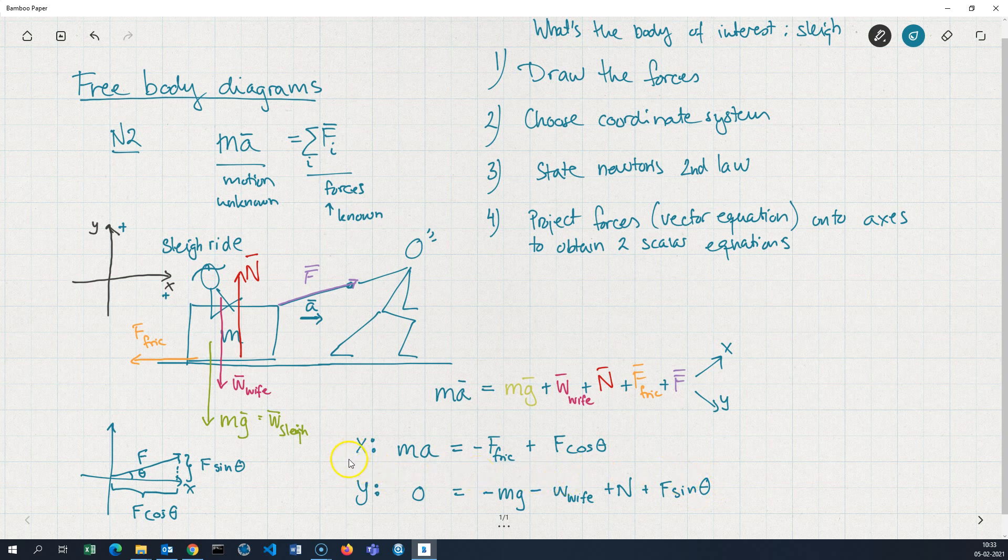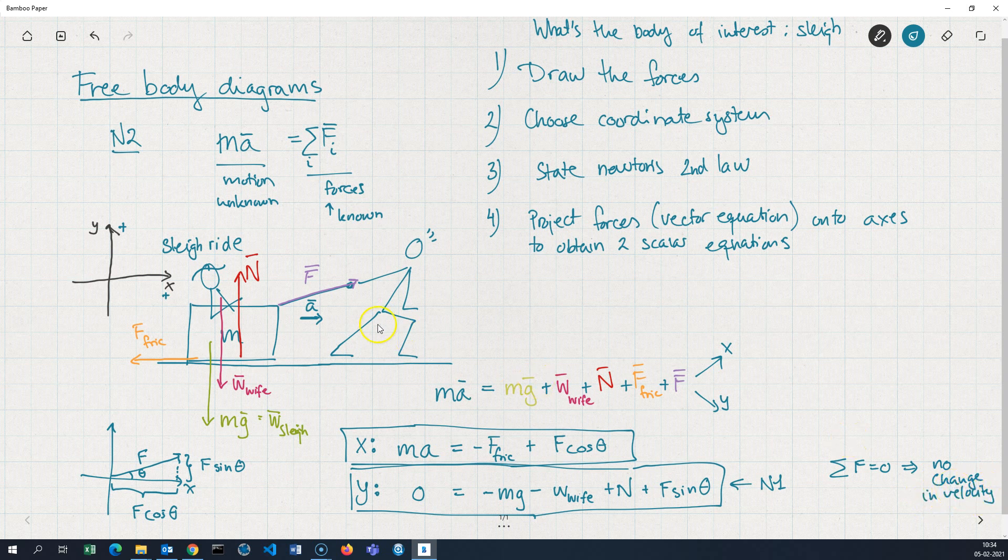What we have now here is two scalar equations. All these symbols now represent numbers, not vectors. And, what you could do from here. Well, I might just want to note one thing. This is actually Newton's first law. Since there is no acceleration. So, we would say that we've actually stated Newton's first law, which says that a body on which the sum of forces is equal to zero doesn't move. Well, that's not entirely true. What it says is, there's no change in velocity. In this special case, the sleigh doesn't move in the vertical direction. So, that's a special case of no change in velocity.